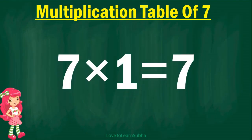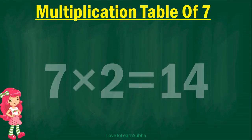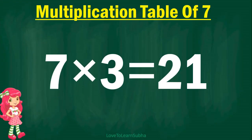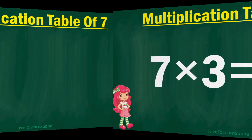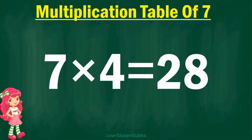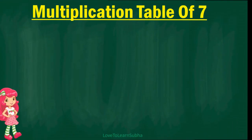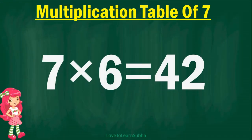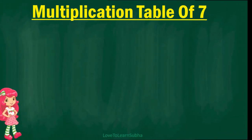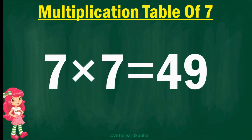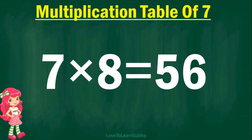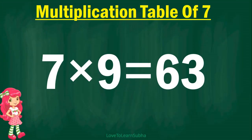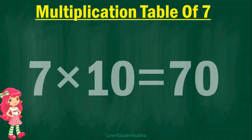7 ones are 7, 7 twos are 14, 7 threes are 21, 7 fours are 28, 7 fives are 35, 7 sixes are 42, 7 sevens are 49, 7 eights are 56, 7 nines are 63, 7 tens are 70.